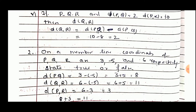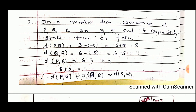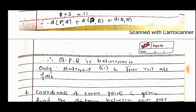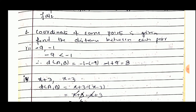On a number line, the coordinates of points P, Q, R are 3, minus 5, and 6 respectively — state true or false. Distance PQ: 3 minus (minus 5) equals 3 plus 5 equals 8. Distance QR: 6 minus (minus 5) equals 6 plus 5 equals 11. Distance PR: 6 minus 3 equals 3. We see that 8 plus 3 equals 11, so distance PQ plus distance PR equals distance QR. Only this statement is true; the rest are false.